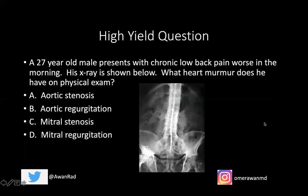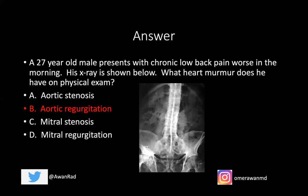Back to the opening question: a 27-year-old male with chronic low back pain worse in the morning. This is a young male with back pain — automatically think ankylosing spondylitis. His x-ray shows the bamboo spine, fusion of interspinous ligaments, consistent with AS or IBD arthropathy. A very high-yield USMLE association is ankylosing spondylitis and aortic regurgitation — that is the murmur you would see on physical exam. Please pass this along to friends and colleagues, and I'll see you next week. Thank you.